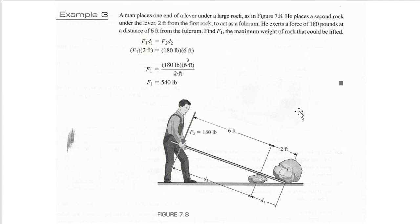And in this example here, a man places one end of the lever under a large rock. He places the second rock under the lever, 2 feet from the first rock to act as a fulcrum. He exerts 180 pounds of force at a distance 6 feet from the fulcrum.